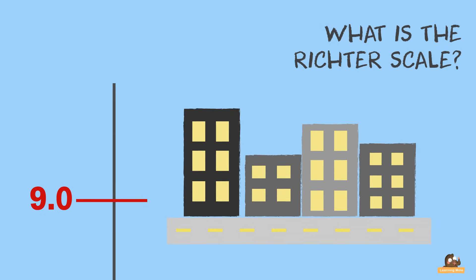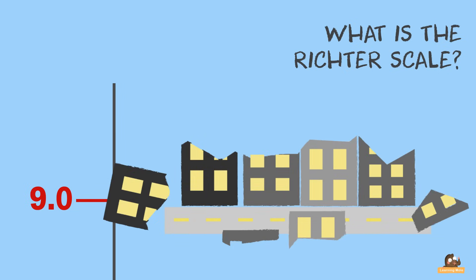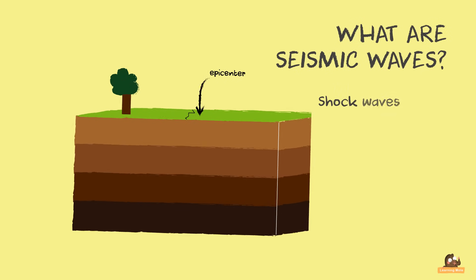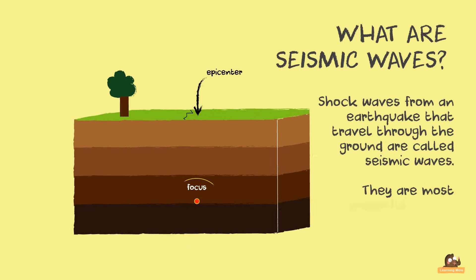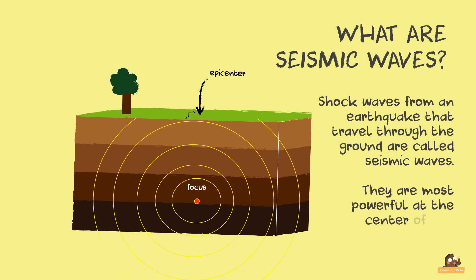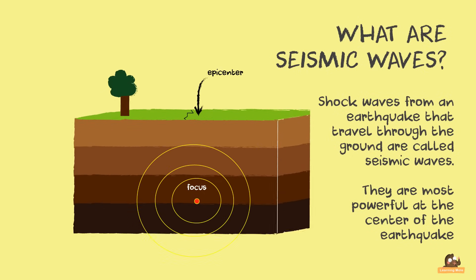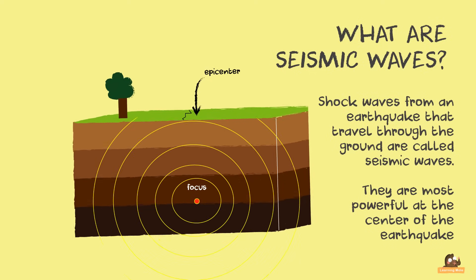Nine and up: world cities could be flooded and there will be a lot of damage. Shock waves from an earthquake that travel through the ground are called seismic waves. They are most powerful at the centre of the earthquake, but they travel through much of the earth and back to the surface. They move quickly, at 20 times the speed of sound.